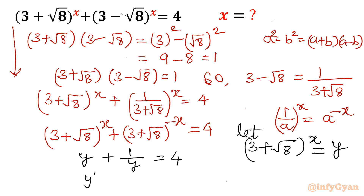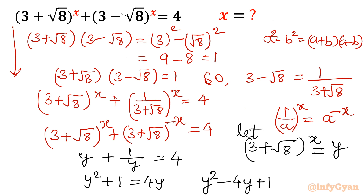Multiplying both sides by y gives y² + 1 = 4y. Taking 4y to the left side, the equation becomes y² - 4y + 1 = 0. This is a very important quadratic equation.